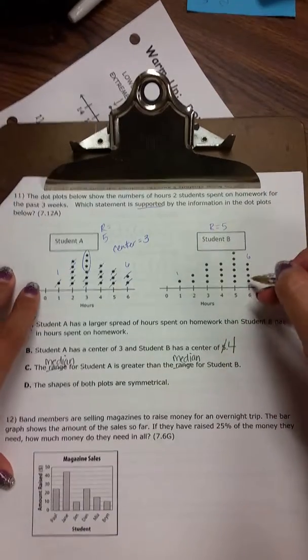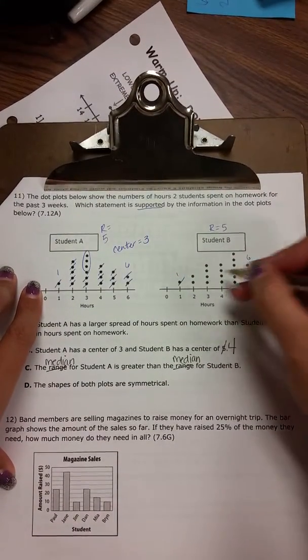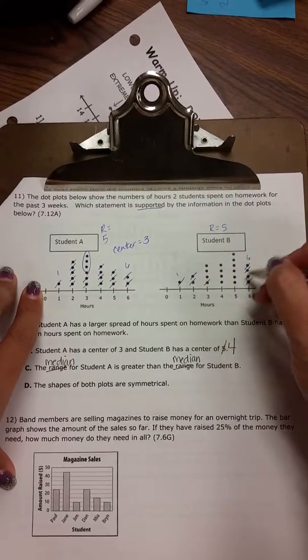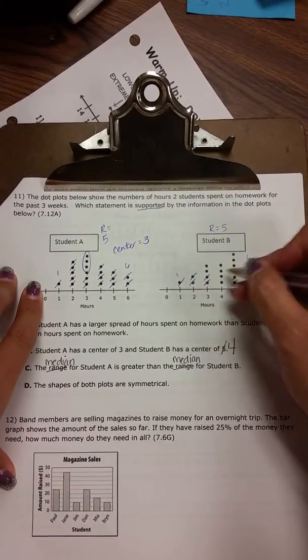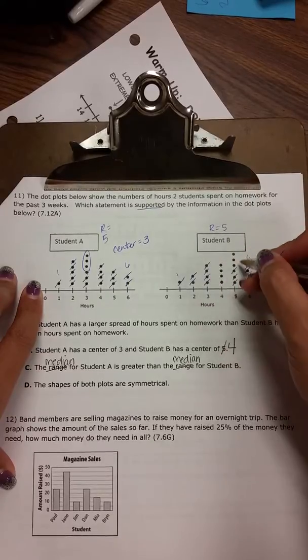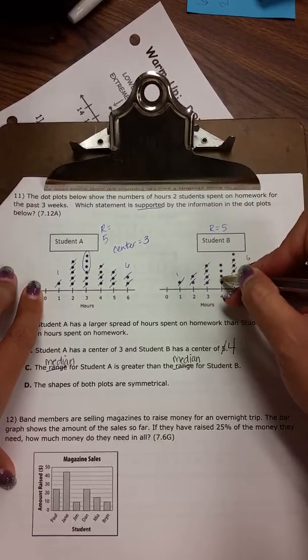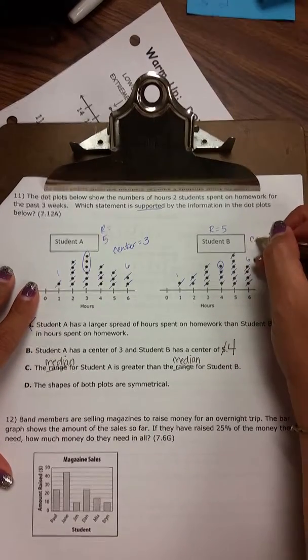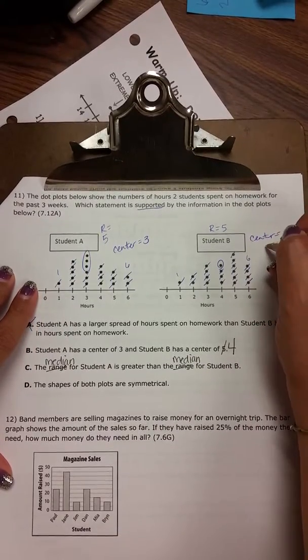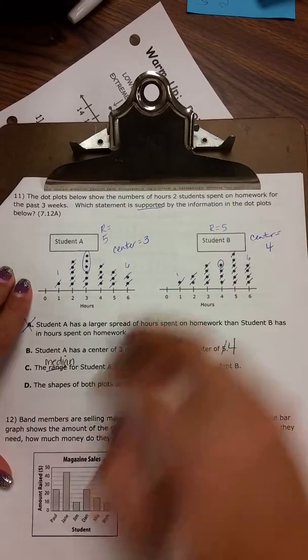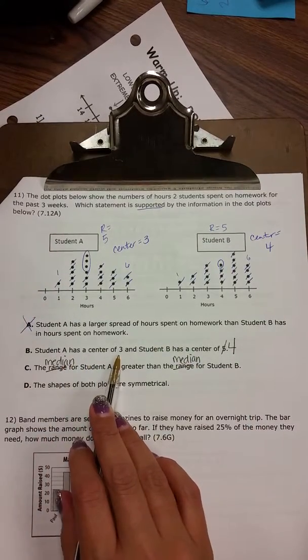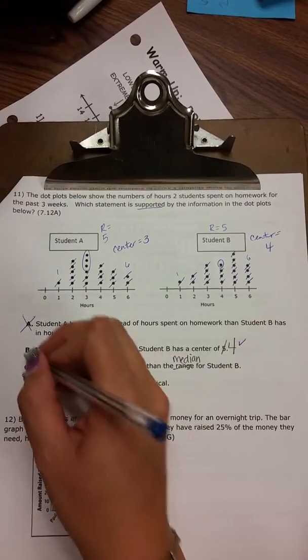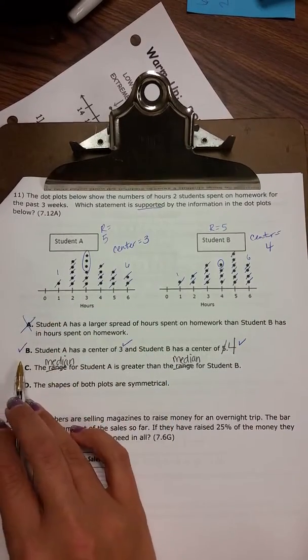And let's work on student B, large and small. And four is my center for student B. So let's read that again. Student A has a center of three. Yes. And student B has a center of four. Okay. So that's a good question or good answer choice. Let's look at the rest.